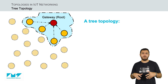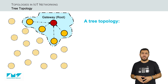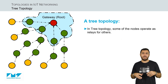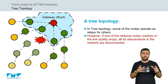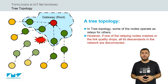Next, we have the tree topology, in which some of the nodes might not be in the radio propagation range of the gateway. Thus, this approach lets some of the nodes operate as relays for others by forming a multi-hop tree topology that is rooted in the gateway. Even though the multi-hop tree topology overcomes the issue of a star topology, if one of the relaying nodes crashes or the link quality drops, all of its descendants in the network become disconnected.